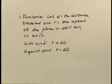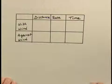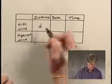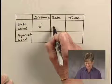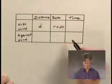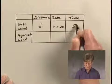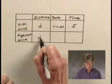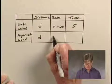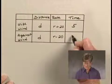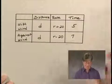Now let's take this information and organize it in a table along with what we're trying to find. When the plane travels with the wind, it goes distance D at a speed of R plus 20, and the time is five hours. The distance against the wind is also D, the speed is R minus 20, and it takes seven hours to travel that same distance.